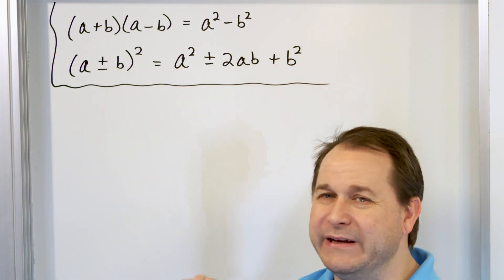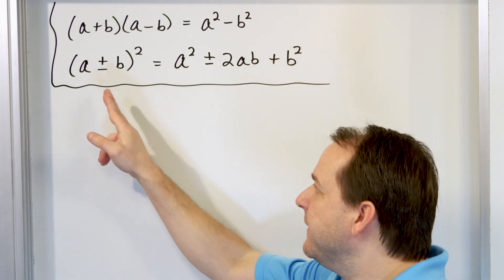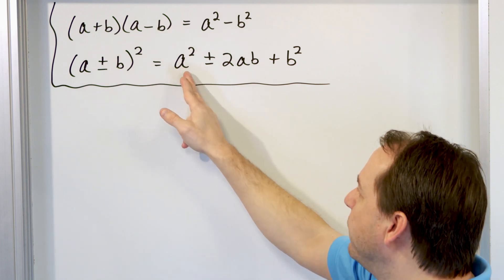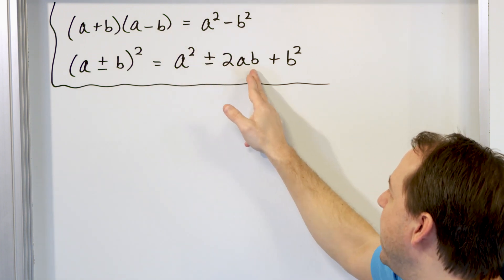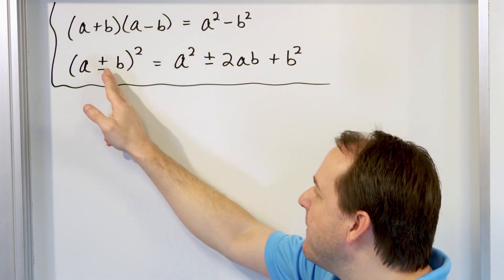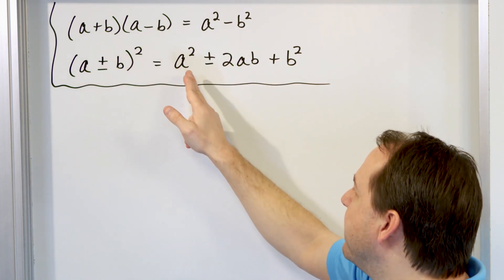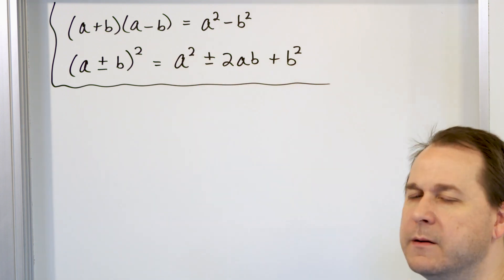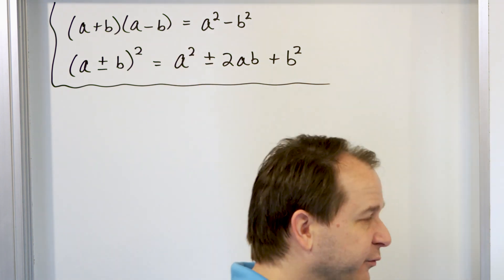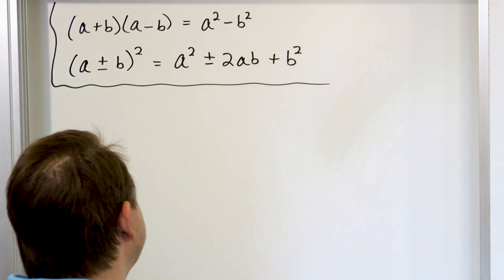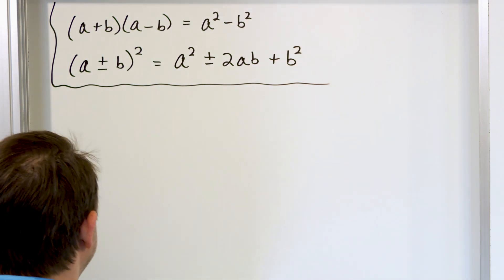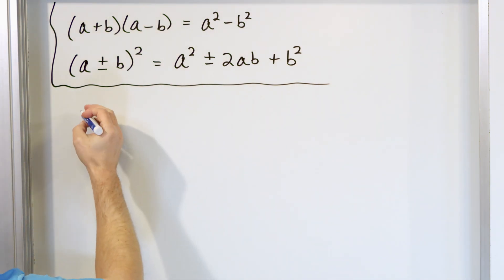Secondly, and probably even more commonly, if you have (a + b)², you'll get a² + 2ab + b². If you have (a - b)², you'll have a² - 2ab + b². So now what we want to do is roll up our sleeves and just use these properties over and over again to help you basically memorize them.